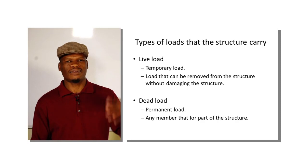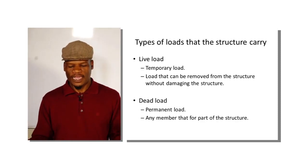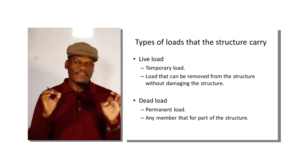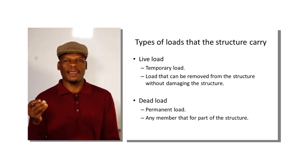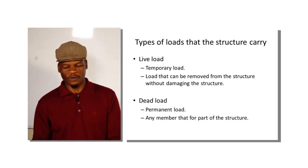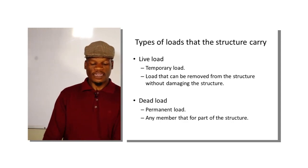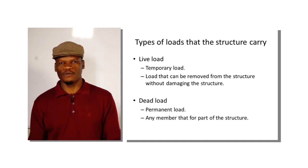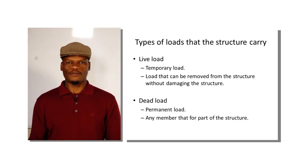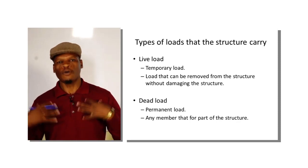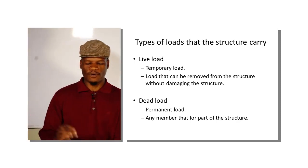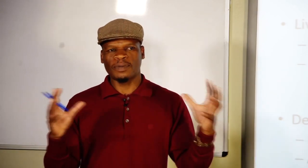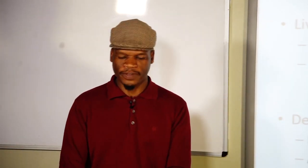When we talk about the dead load, it refers to the permanent structures. If that member is taken out of the building, the structure will collapse or be affected. For example, I cannot leave my left arm at home — if I take it out, the whole structure is affected. In construction, the dead load includes the materials used to build the structure and the roof itself, which cannot be taken out without affecting structural stability.